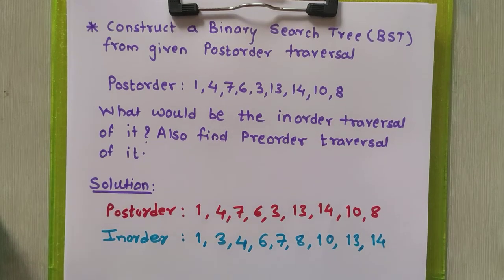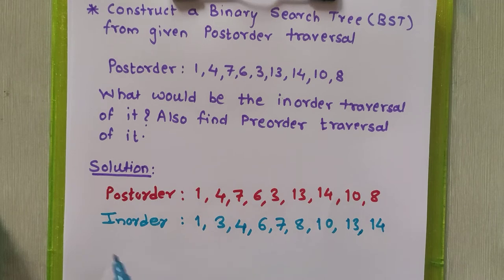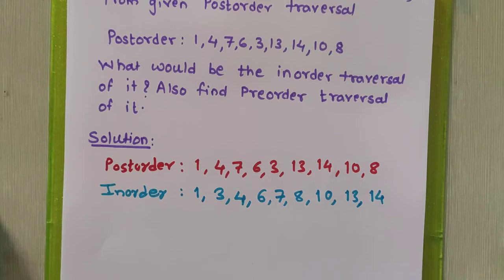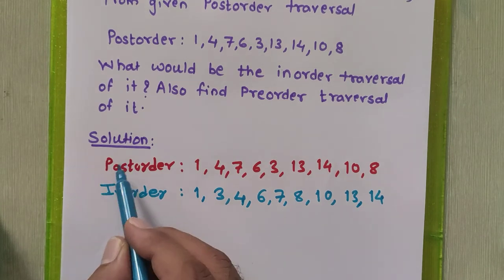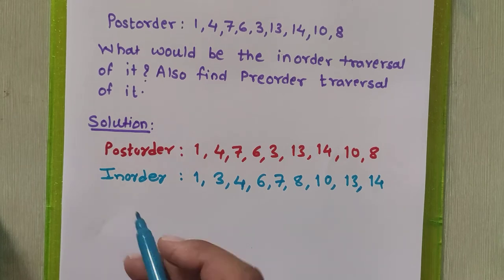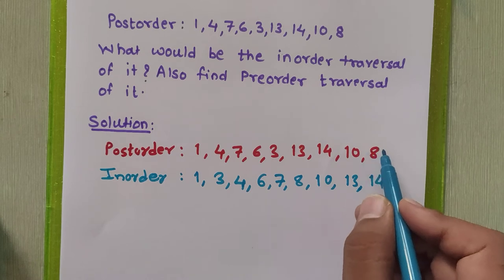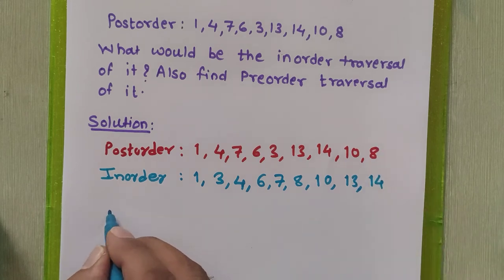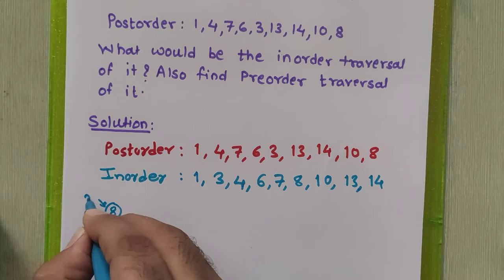Now it is very easy for us to design a binary search tree from the given post order and in order traversal sequences. We have already studied this type of design from two sequences in previous videos. As we know, in the post order sequence the root node always comes last. So it is very easy to find the root node — 8 is the root node of this tree.